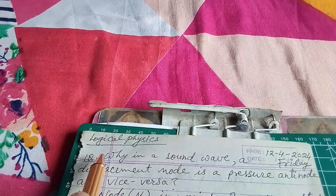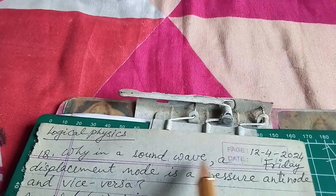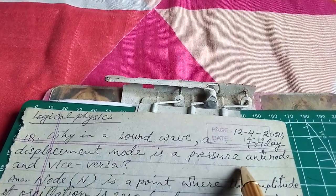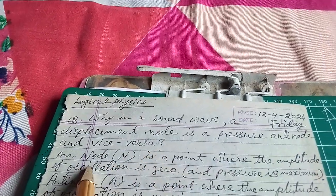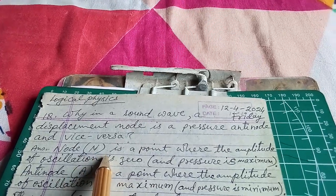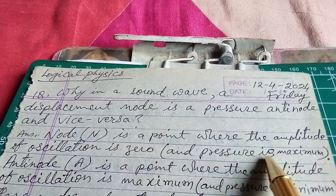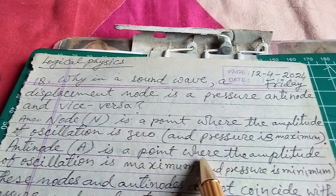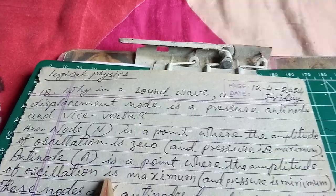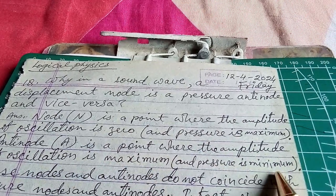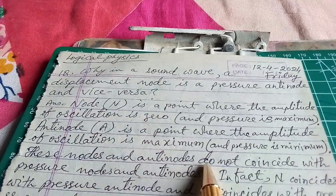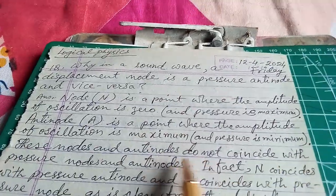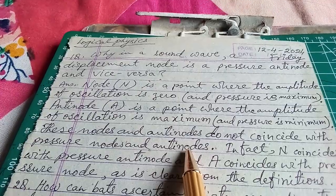Today I'm going to discuss some logical physics, that means some reasoning questions in physics. The first question is: why in a sound wave is a displacement node a pressure anti-node and vice versa? A node, represented as capital N, is a point where the amplitude of oscillation is zero and pressure is maximum. An anti-node, represented as capital A, is a point where the amplitude of oscillation is maximum and pressure is minimum.